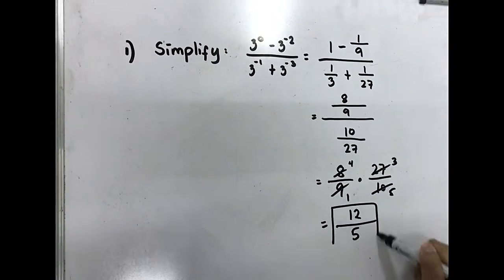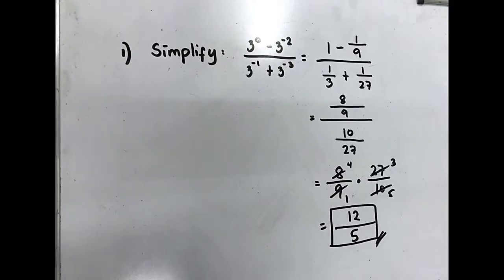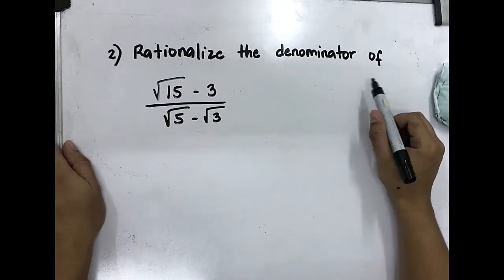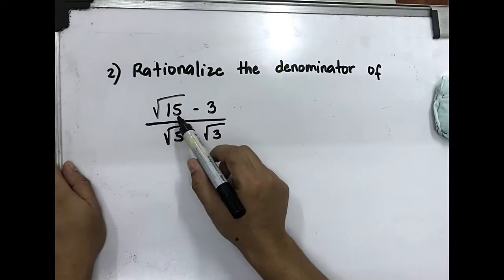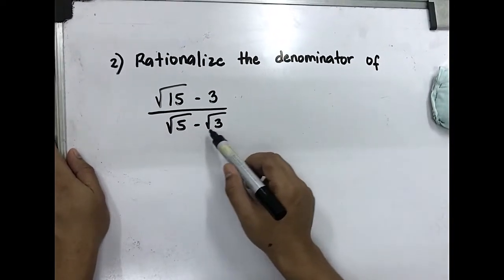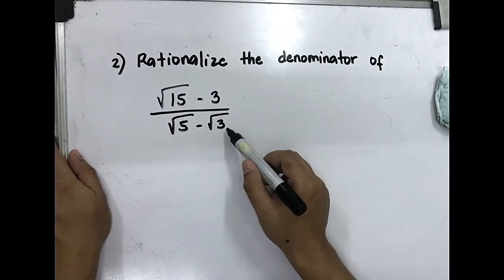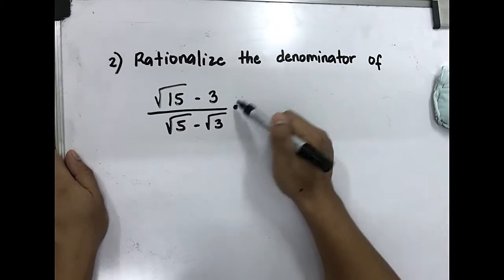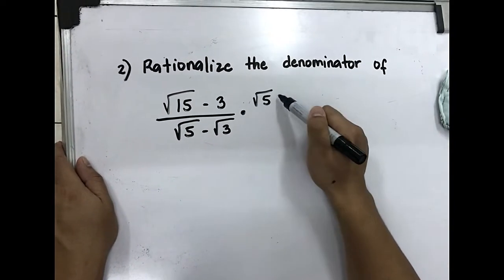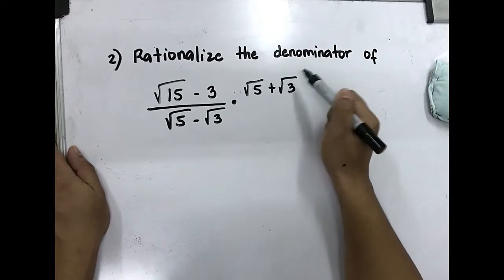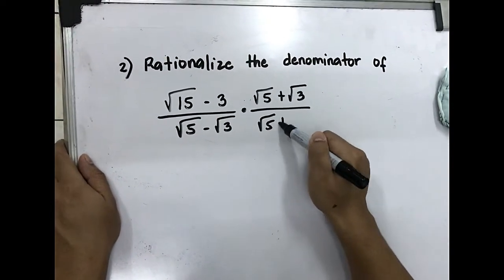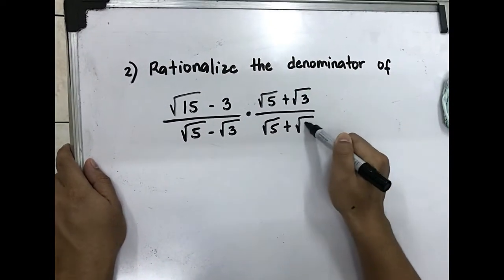Final answer: 12 over 5. Now rationalize the denominator of square root of 15 minus 3, all over square root of 5 minus square root of 3. We need to multiply by the conjugate: square root of 5 plus square root of 3, over square root of 5 plus square root of 3.